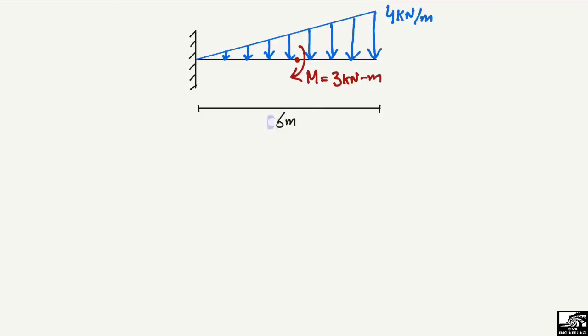This is a cantilever beam of total length 6 meters. There is a uniformly varying load of 4 kilonewtons per meter acting on this beam, and also there is an internal moment of 3 kilonewton-meters acting on the beam at the center of the beam.